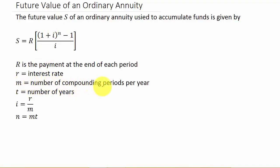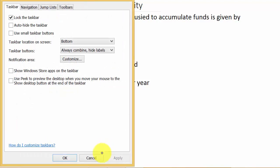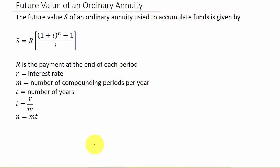M is the number of compounding periods per year. If it's compounded annually, m is 1; semiannually, m is 2; quarterly, m is 4; monthly, m is 12; and daily, m is 365. T represents the number of years. The reason we need little r, m, and t is for i and n, which appear in the formula. I is r over m, and n is m times t.